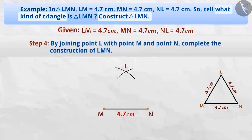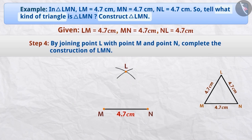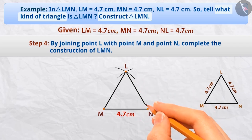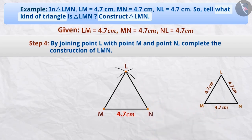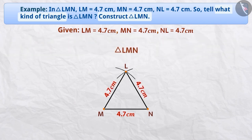Step 4: We can see that both arcs intersect each other at a point. We will name the point of intersection as L. Now, by joining point L with point M and point N, we will complete the construction of triangle LMN. The desired equilateral triangle LMN is ready, in which the length of LM, MN, and NL is 4.7 cm.